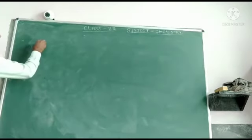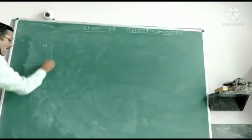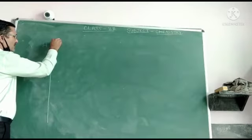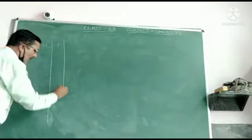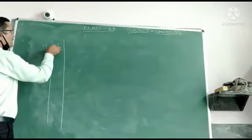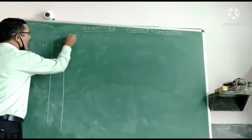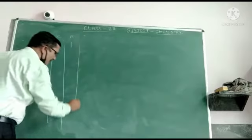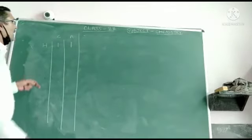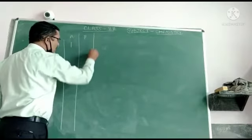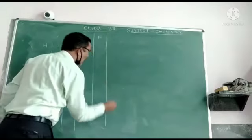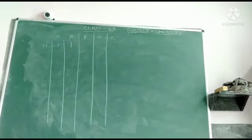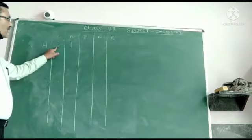For example, we have hydrogen. The atomic number of hydrogen is 1 and the mass number of hydrogen is also 1. If we want to find the number of protons, neutrons, and electrons, let us see how.